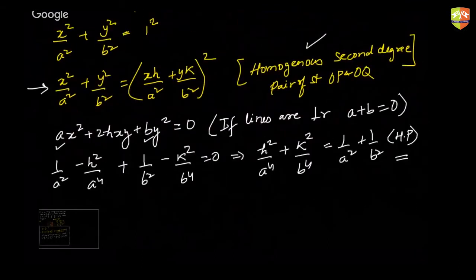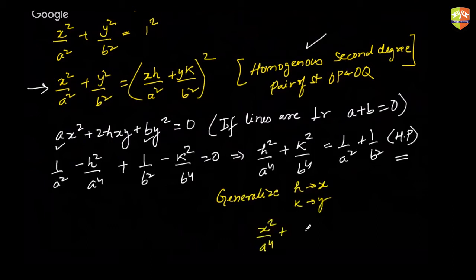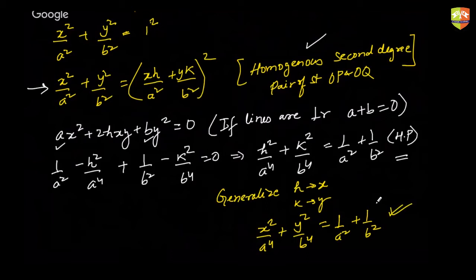When you talk about the locus, replace h with x and k with y to get the locus of h comma k. So the locus of all points from where the chord of contact drawn to this ellipse subtends a right angle at the center is given by that equation — and you'll realize it is itself an ellipse.